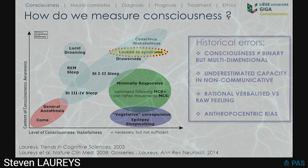I think there's a difference between the rational, analytical me that can verbalize what I feel, and the pure raw feeling that doesn't need language. And there's also the anthropocentric bias — we look at consciousness and ask what it is like to be minimally conscious from the perspective of me, a healthy person.